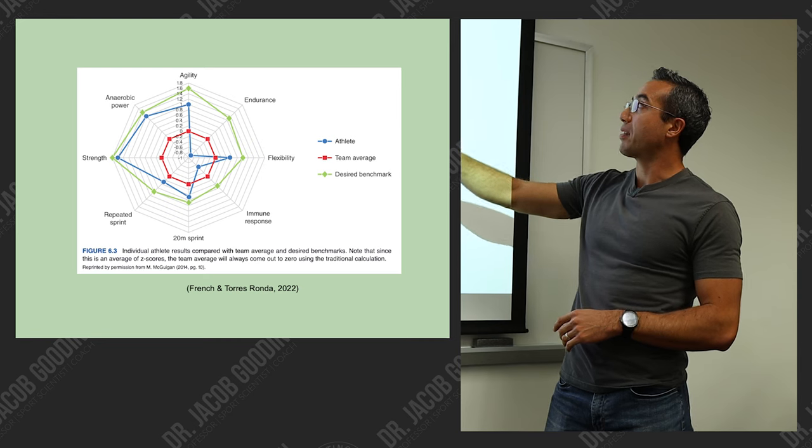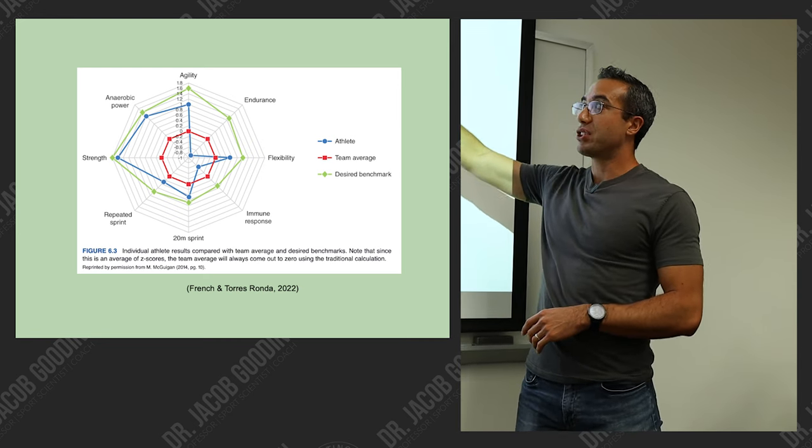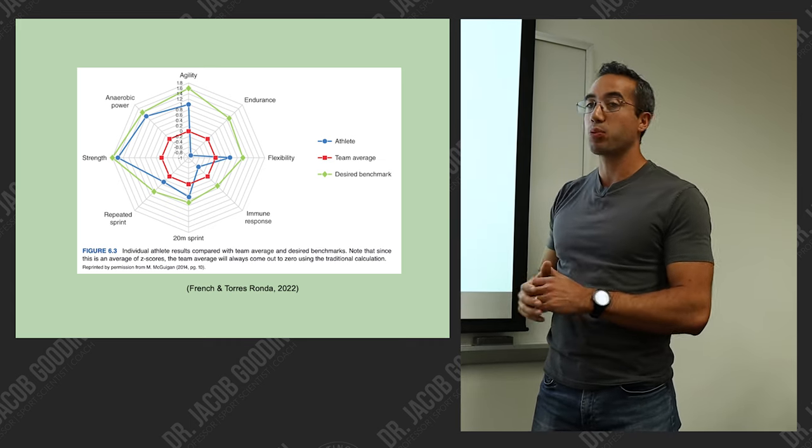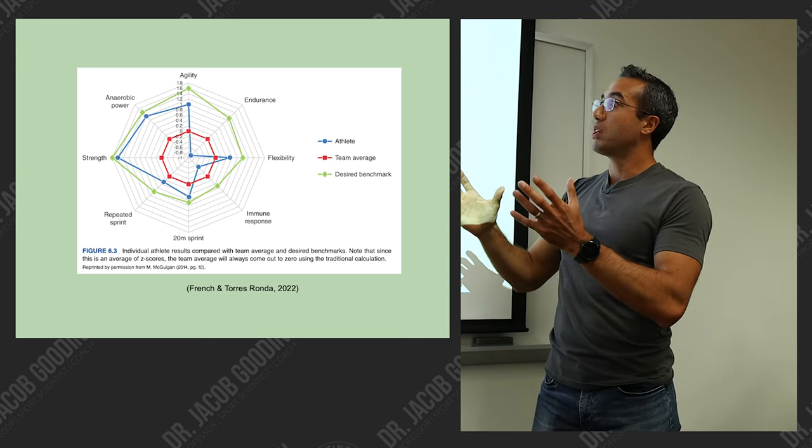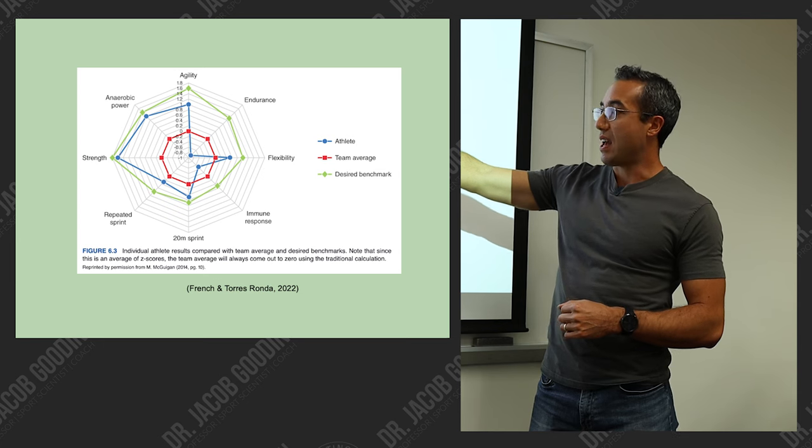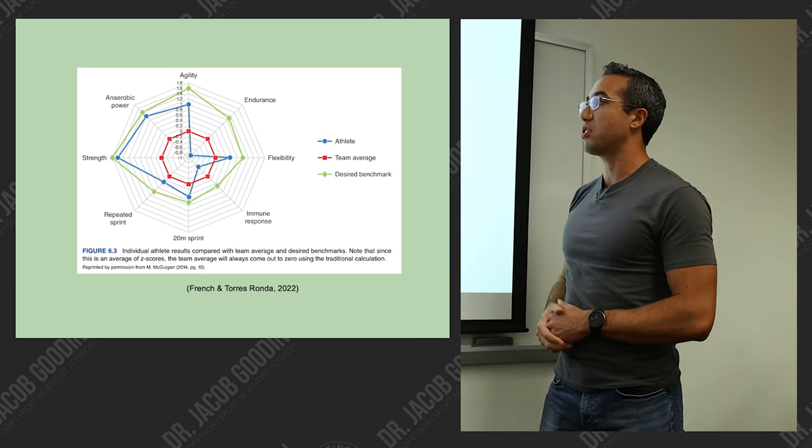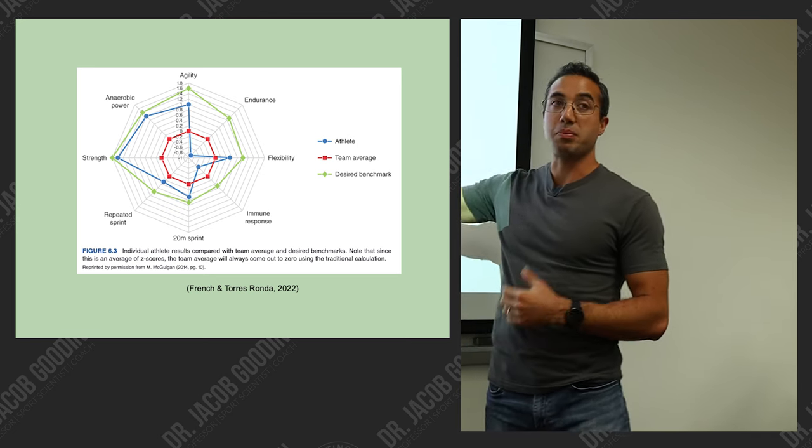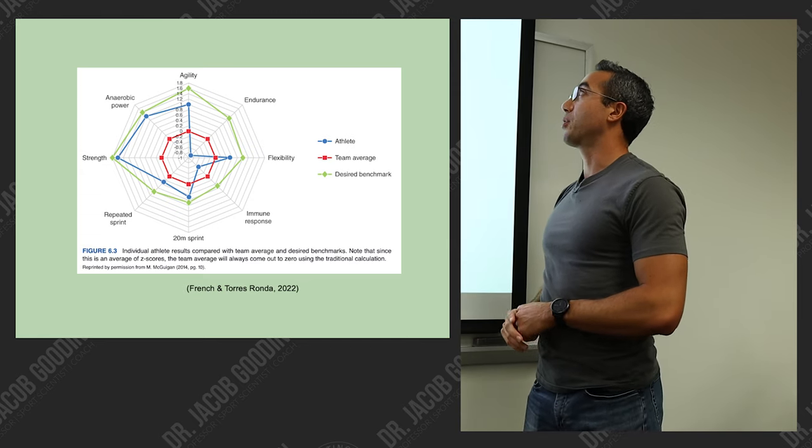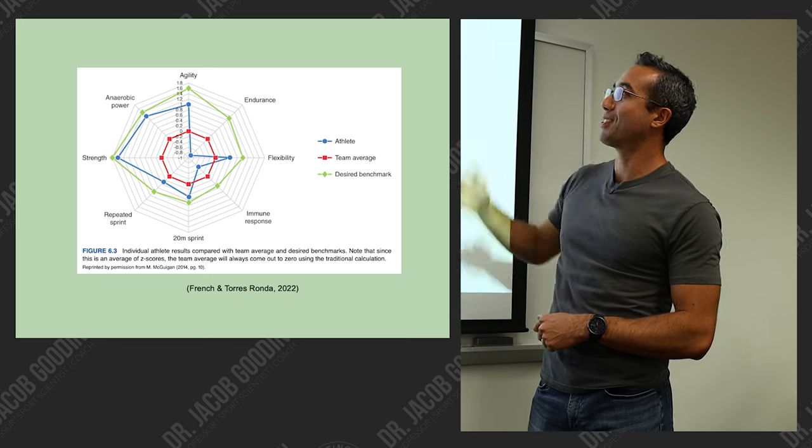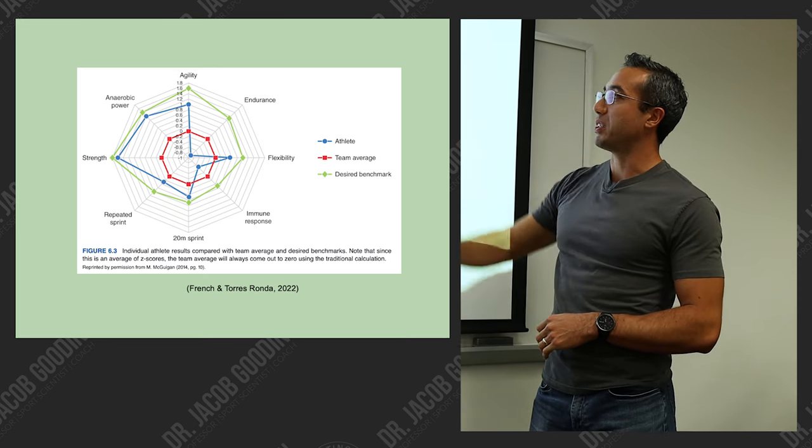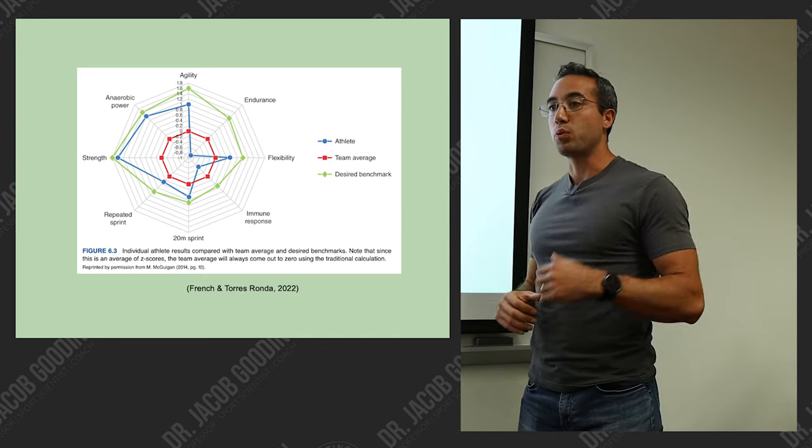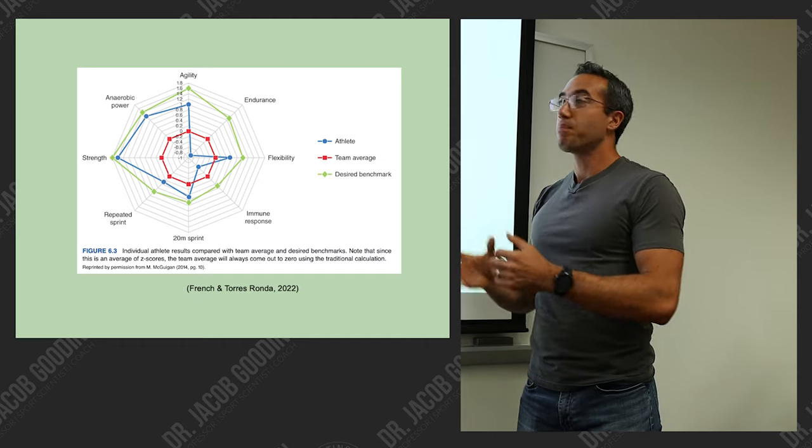Here's an example of a radar plot, also called a spider graph. This is from the text, showing different fitness characteristics: flexibility, endurance, agility, strength, and so on. We're comparing the athlete in blue to the team average in red to the desired benchmark in green. We can see that anaerobic power, strength, and 20-meter sprint are pretty good. Their immune response, maybe they're dealing with some things there, overstressed or overworked, under-recovered. And their endurance is crap, so they need to work on that. We can start to put this athlete into a certain archetype and guide their training.